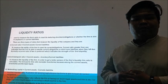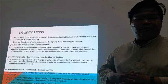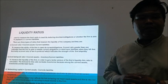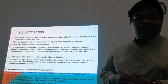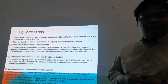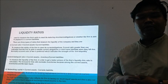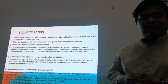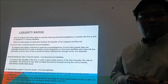For current ratio, we use the formula: current assets divided by current liabilities. We use it to measure the ability of the firm to meet its current obligations. A current ratio greater than one indicates that the firm is able to meet its short-term liabilities. A ratio of 2 is preferred, which indicates the strength of the firm's liquidity.